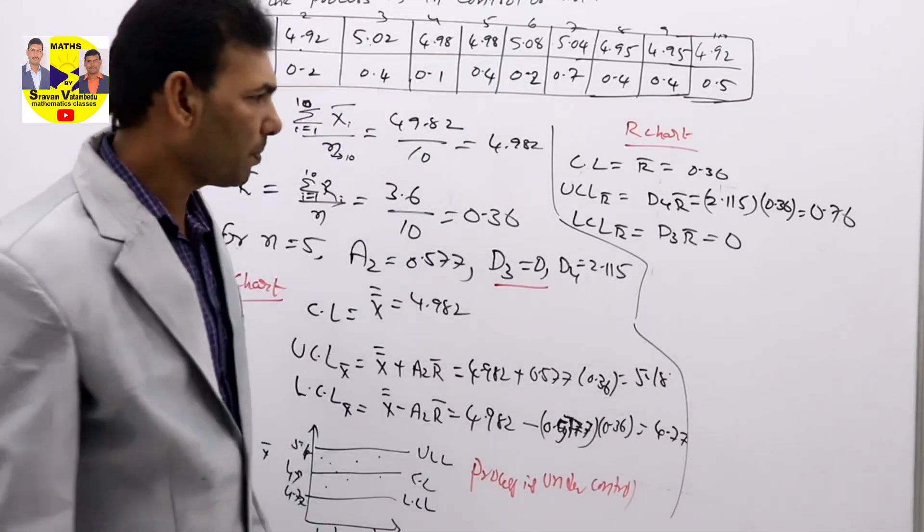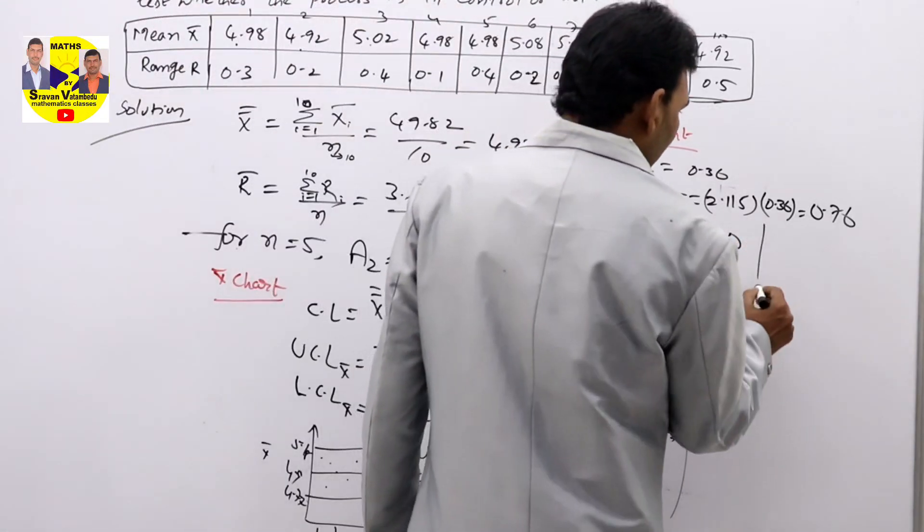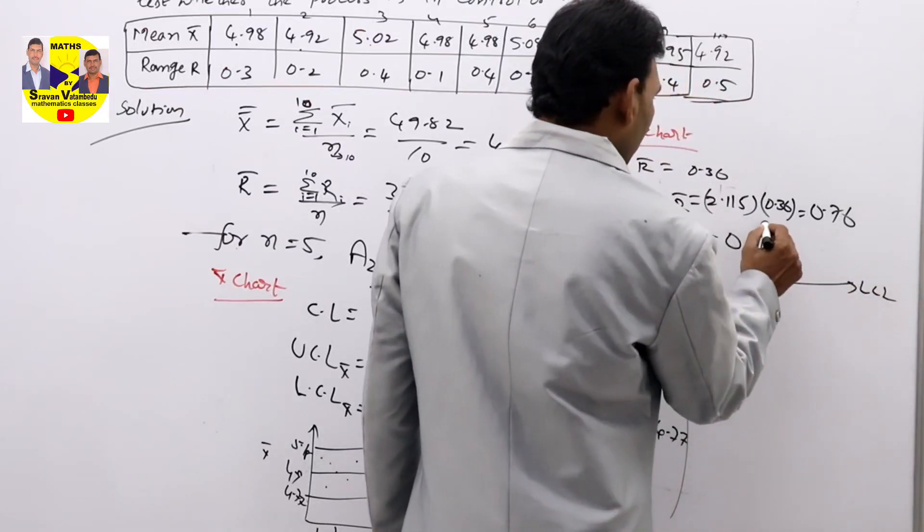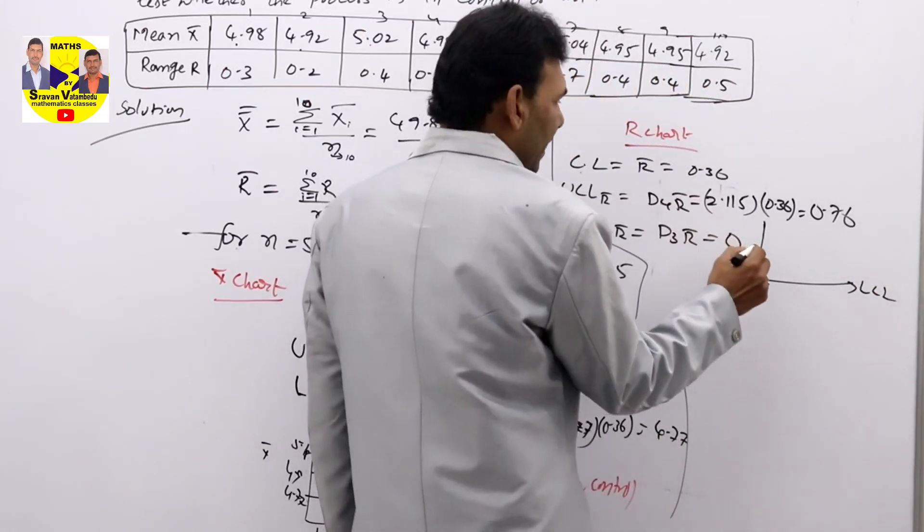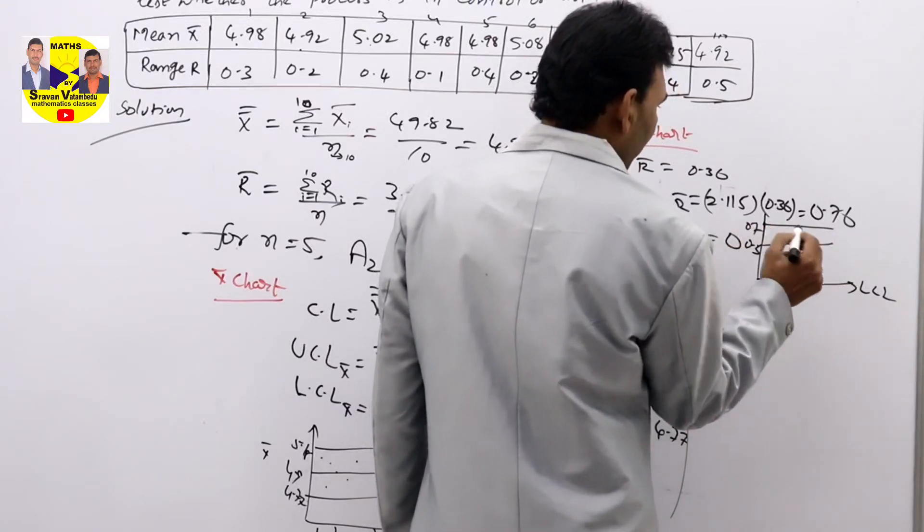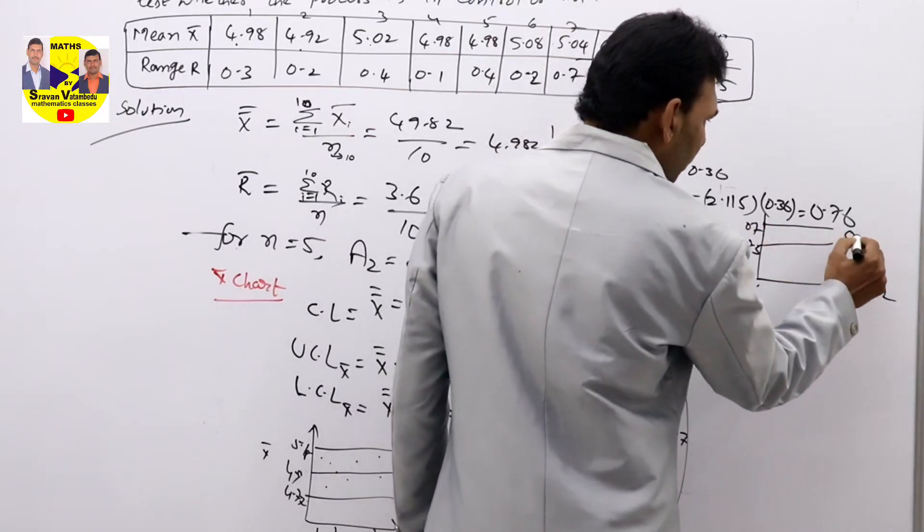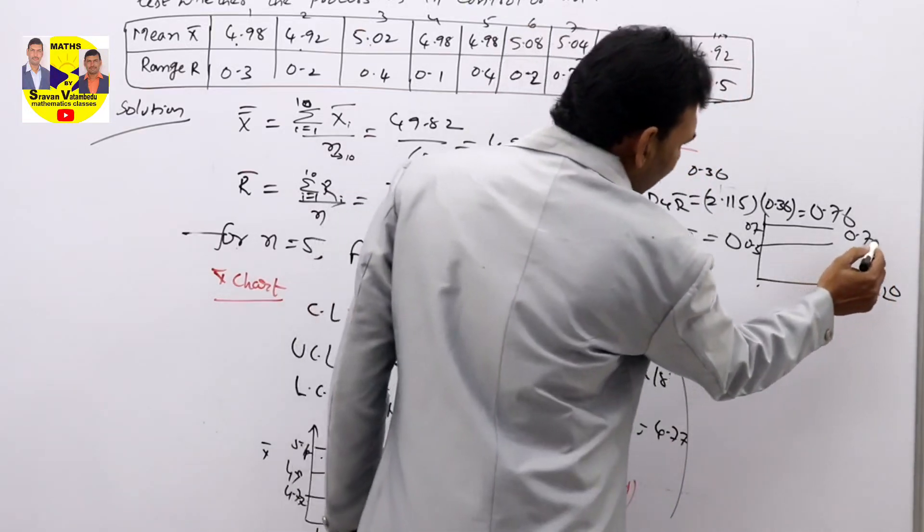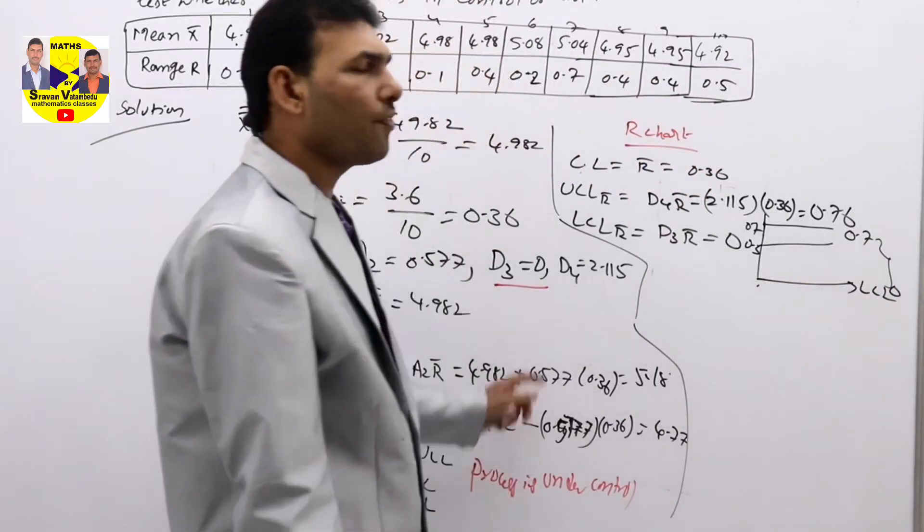That means, if you see the rough diagram, this will be the LCL. Control line you will get at 0.3. Upper control line you will get at 0.7. Now, this is 0.7, this is 0. If all the values are in between 0 and 0.7 of R bar, then we can say process is under control.